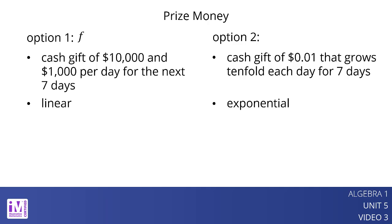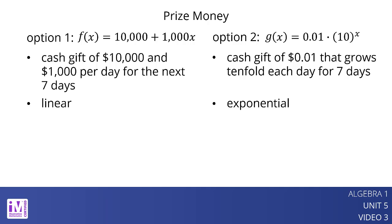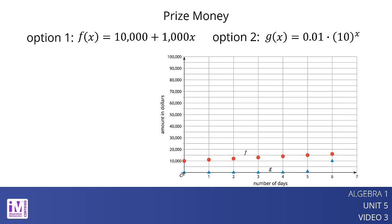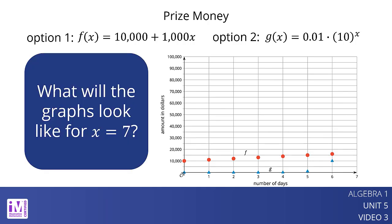Let f represent the amount of money x days after winning with the first option, and let g represent the amount of money x days after winning with the second option. The function for option 1 can be written f of x equals 10,000 plus 1,000x. The function for option 2 can be written g of x equals 0.01 times 10 to the x. Here is a graph of f and g on the same coordinate plane.